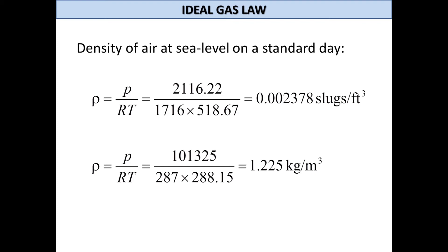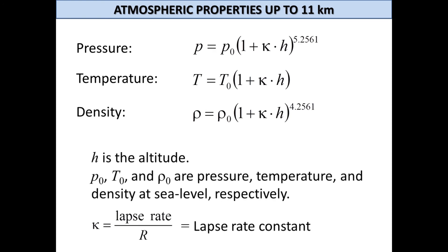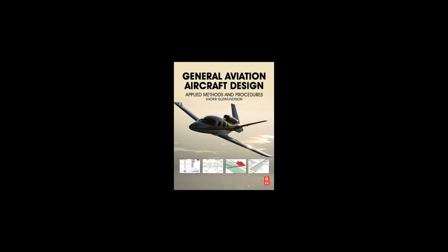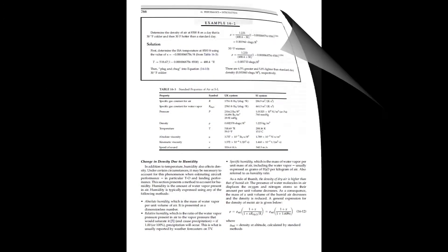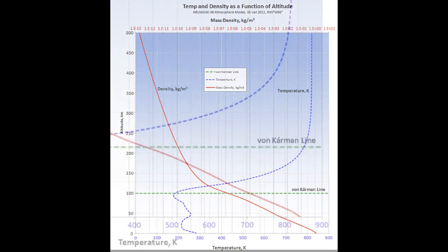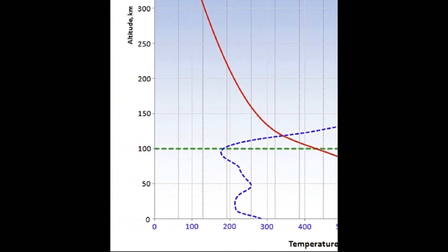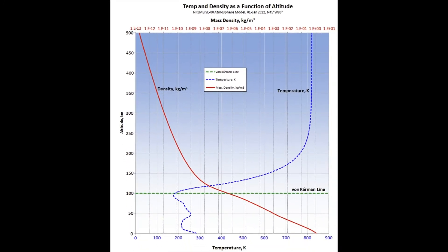We can also estimate these properties at other altitudes. For altitudes below about 11 km or 36,000 feet, we do this using hydrostatics and the temperature gradient — the change in temperature with altitude, also called lapse rate. More information about these equations and other aspects of atmospheric modeling is presented in Chapter 16 of my book. Appendix A provides methods to calculate pressure, temperature, and density from sea level to 276,000 feet or 85 km, close to the von Karman limit, generally presumed at 100 km, at which atmospheric flight is no longer possible due to low atmospheric density.